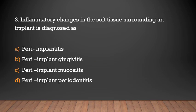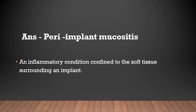Inflammatory changes in the soft tissue surrounding an implant is diagnosed as: periimplantitis, periimplant gingivitis, periimplant mucositis, or periimplant hedoronditis. The answer is periimplant mucositis. An inflammatory condition confined to the soft tissue surrounding an implant is called periimplant mucositis.